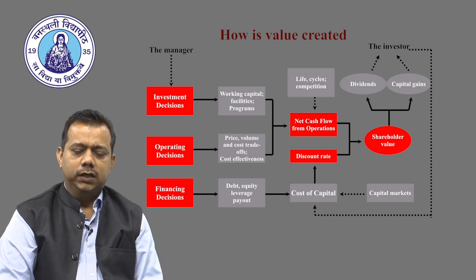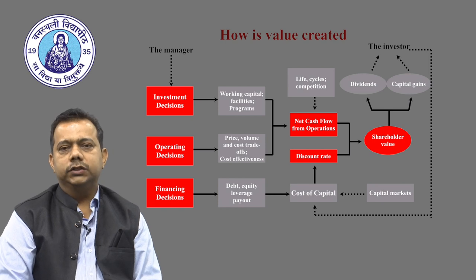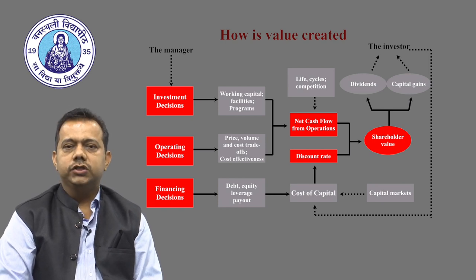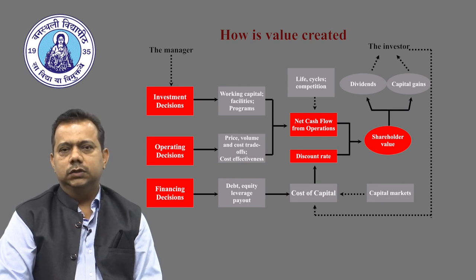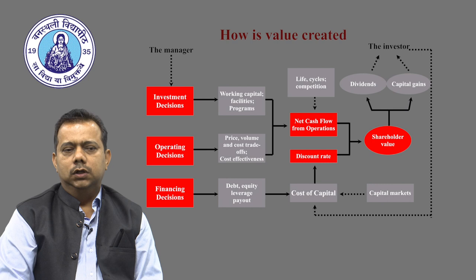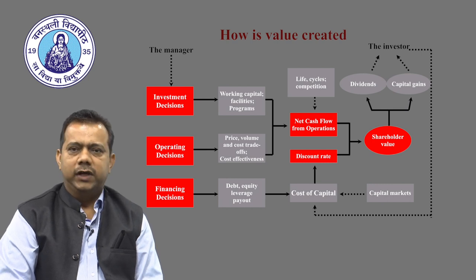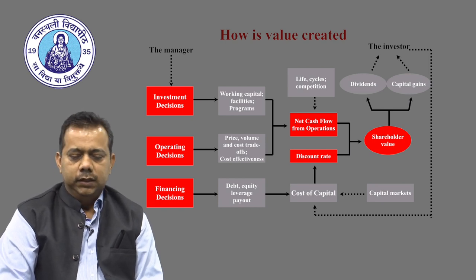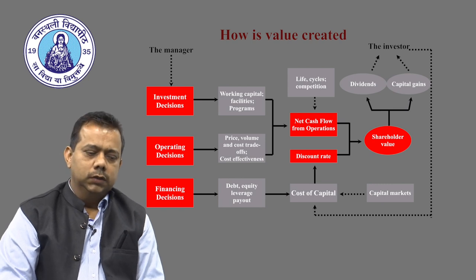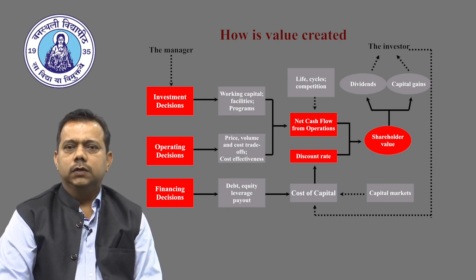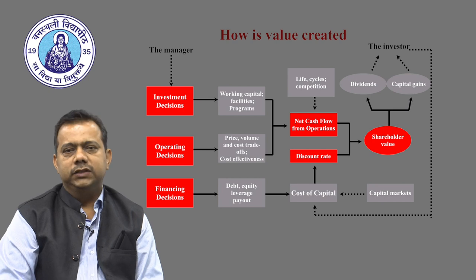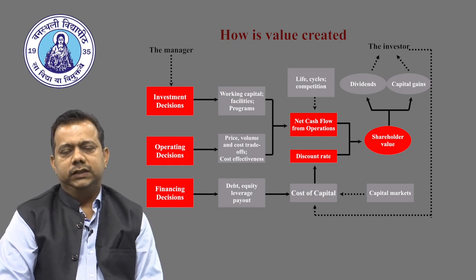The second way in which the finance manager creates value for the shareholder is by taking operating decisions. Operating decisions are essentially what we learn in finance as price versus volume — in what product mix does the finance manager need to produce to maximize cash flows. The third method is what is called the financing decision.